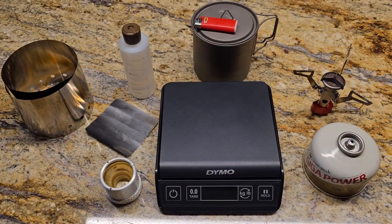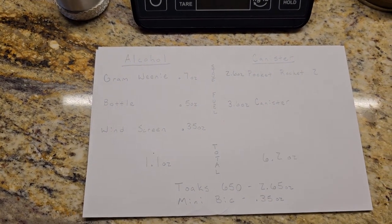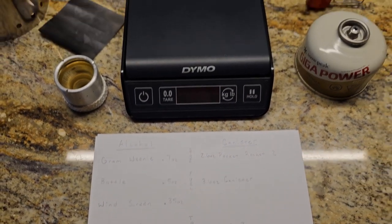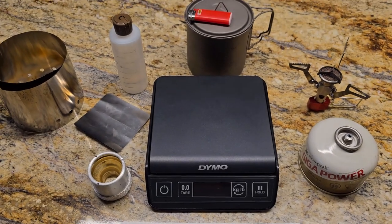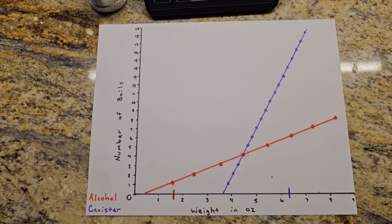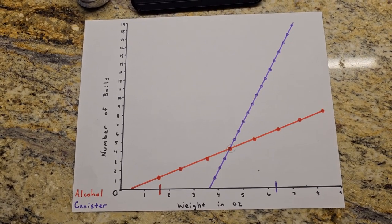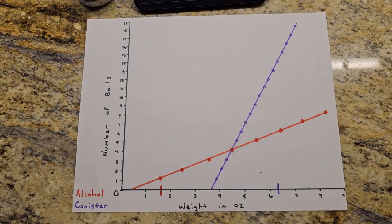So now let's talk about how the alcohol stove setup, even though it comes in at 5 ounces less than the canister fuel setup, can actually end up being heavier than the canister setup. I made this little graph here to represent exactly how the alcohol fuel setup can end up being heavier than the canister fuel.